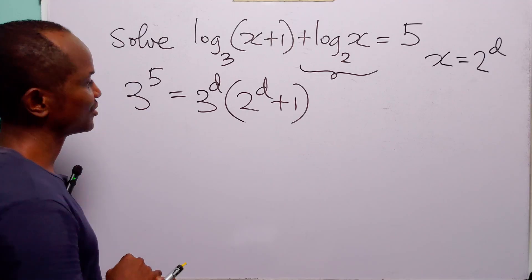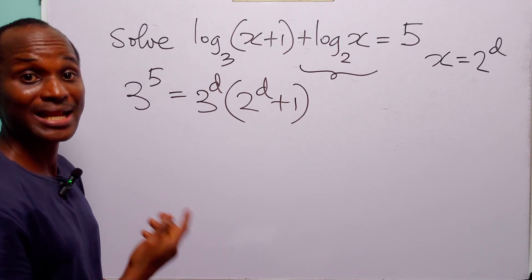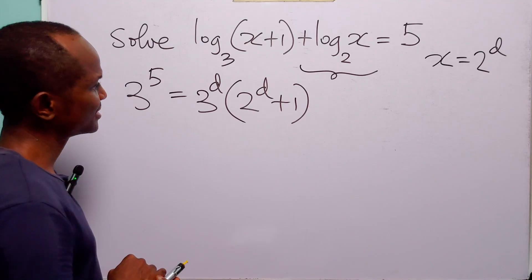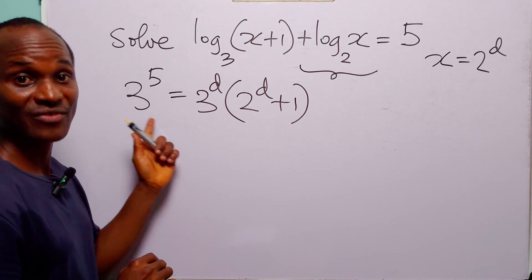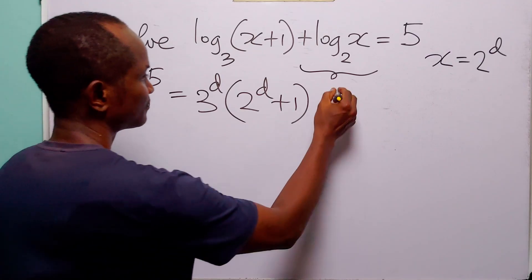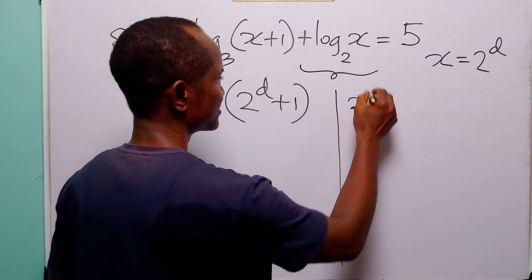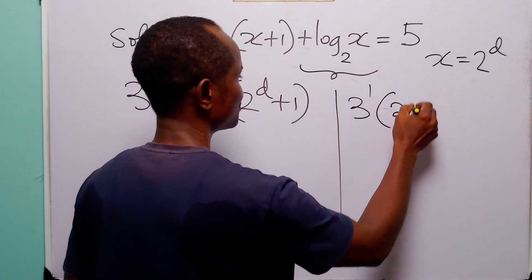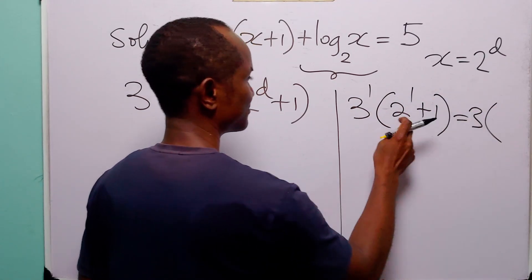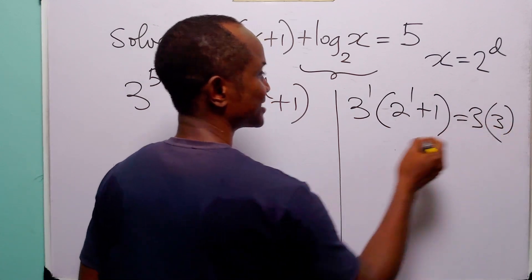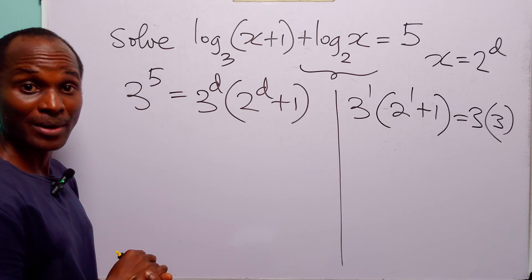Looking at this equation, d must be greater than 0 but less than 5. So let us test some values of d to see which value satisfies this equation. When d is equal to 1, the right-hand side is 3 to the power 1 times 2 plus 1. This is 3 times 3, which is 9. Since 9 is 3 squared, it's not equal to 3 to the power 5.